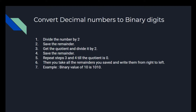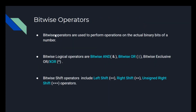Now we're going to move on to the bitwise operators. We have the bitwise AND operator, the bitwise OR operator, and the bitwise exclusive OR, which is XOR. Bitwise operators perform operations on the actual binary bits of a number. The bitwise AND is written as ampersand, the bitwise OR as a single pipe, and bitwise XOR as a caret sign. The bitwise SHIFT operators include the left shift represented as double less-than, the right shift as double greater-than, and the unsigned right shift as a triple greater-than sign.